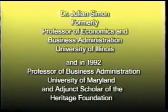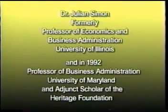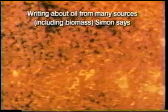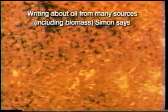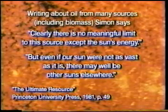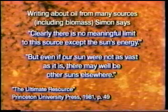A leader among these technological optimists is Dr. Julian Simon, formerly professor of economics and business administration at the University of Illinois and adjunct scholar of the Heritage Foundation. Simon has written that we will never run out of copper because copper can be made from other metals. Letters to the editor jumped all over him about chemistry; he brushed it aside, saying if we ever need to make copper from other metals we will figure out a way. He has absolute faith that human intellect can solve every problem. In his Princeton University Press book discussing oil from biomass, he says: 'Clearly there's no meaningful limit to this source except for the sun's energy' — and notes that if our sun weren't so vast, 'there may well be other suns elsewhere.'